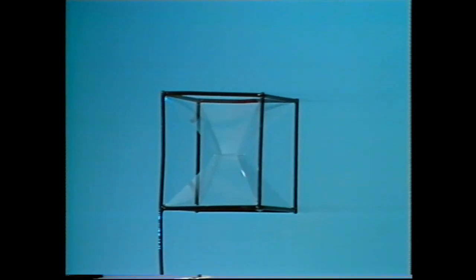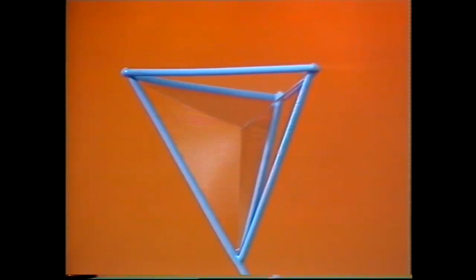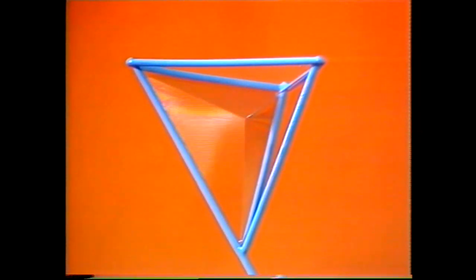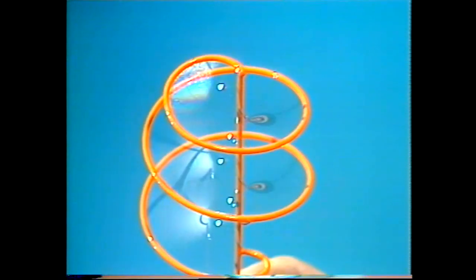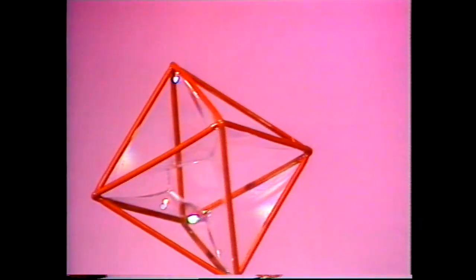And other frames form complex bubble shapes as well. In each case, the bubble film forms a shape of the smallest possible area. And in the case of a free bubble which has no supporting frame, that shape's a sphere.